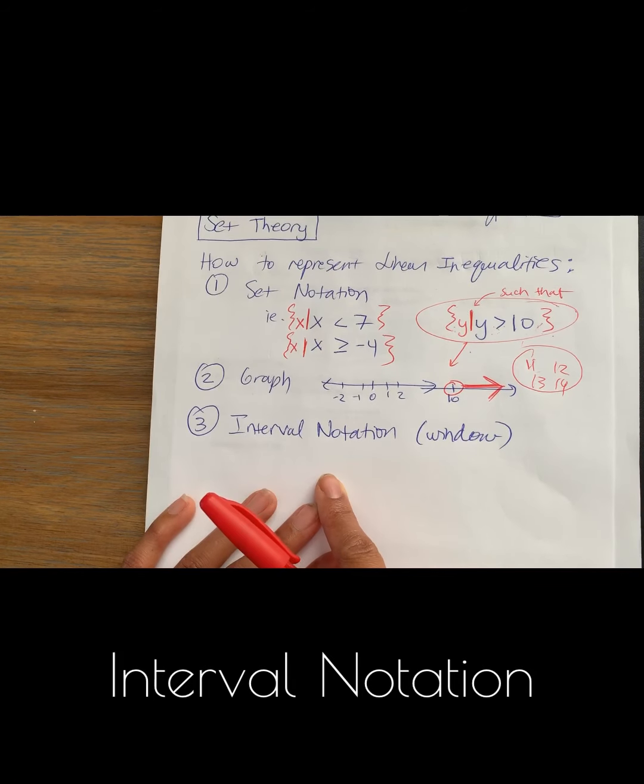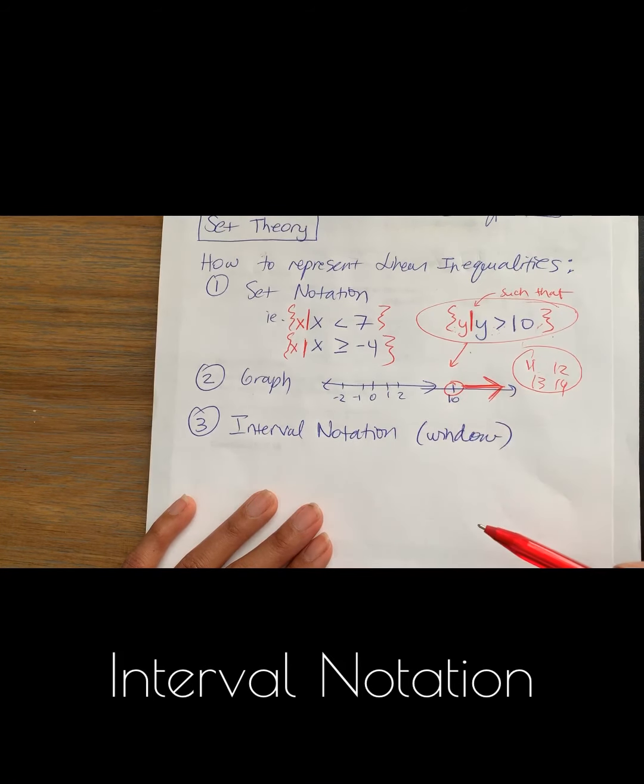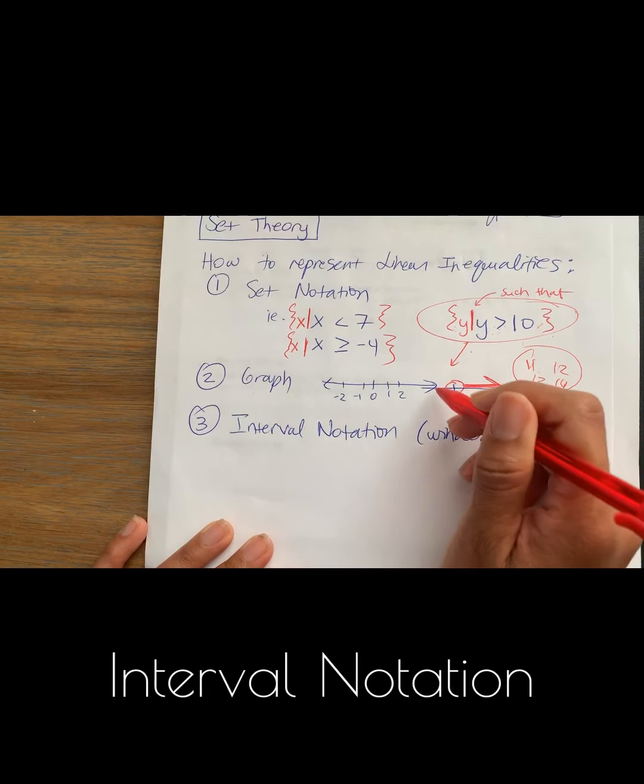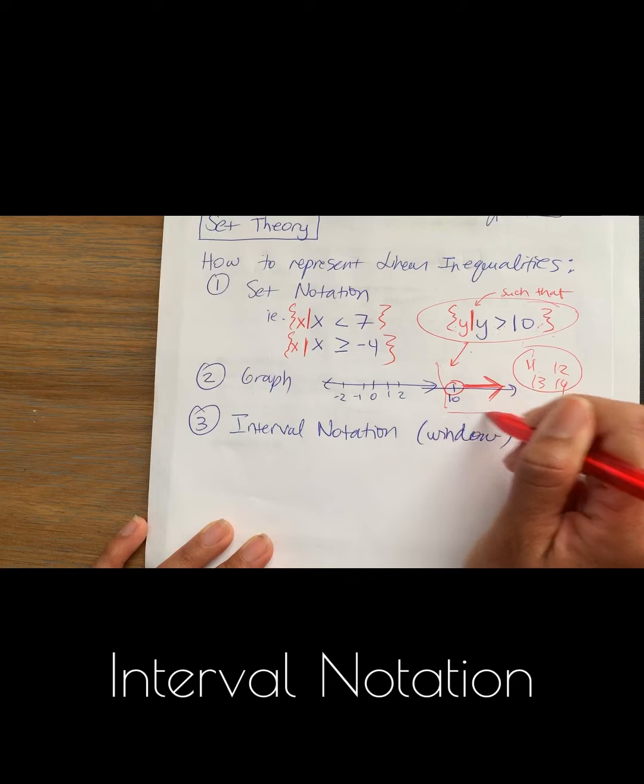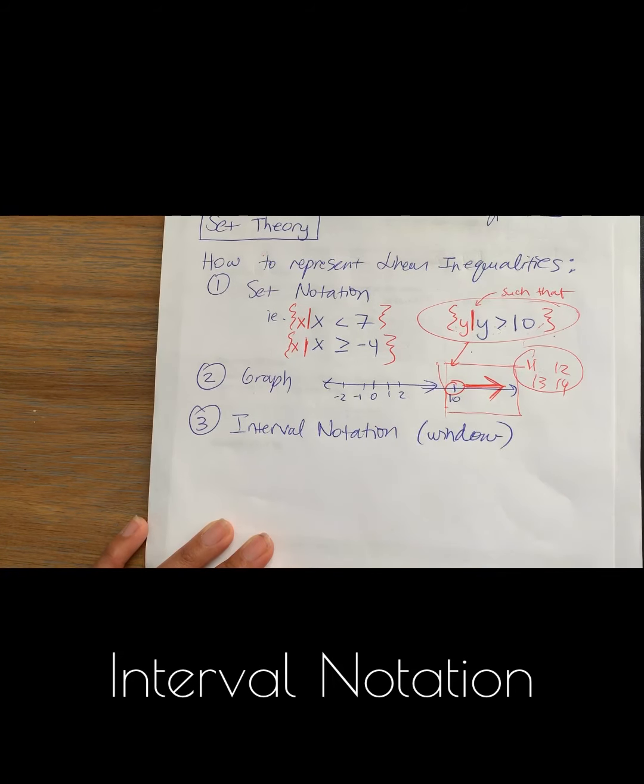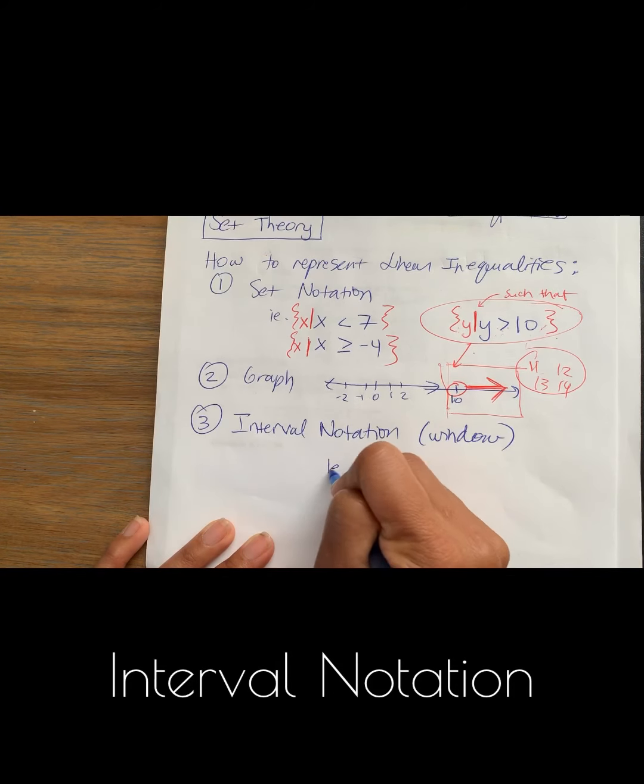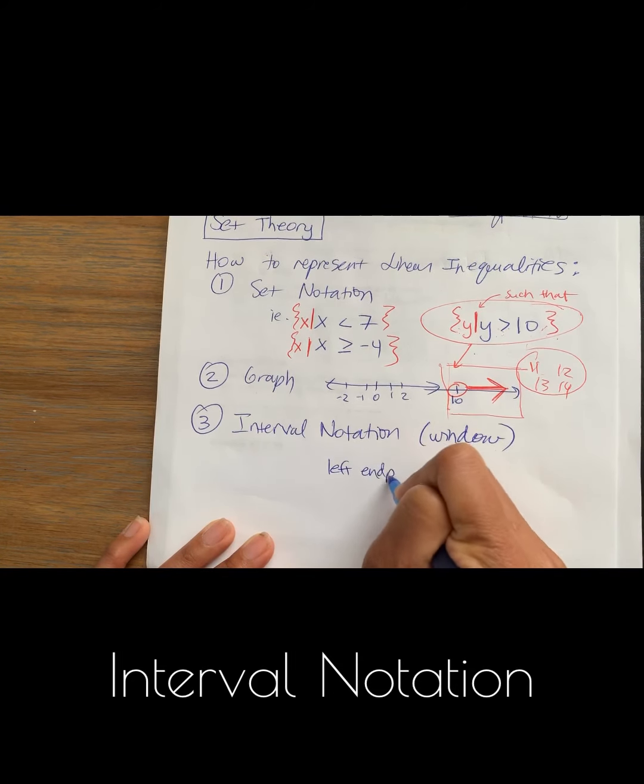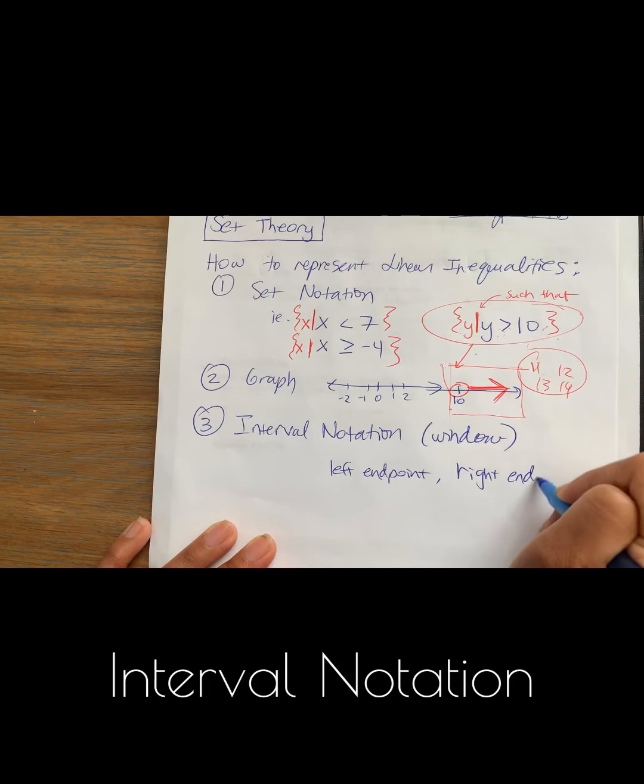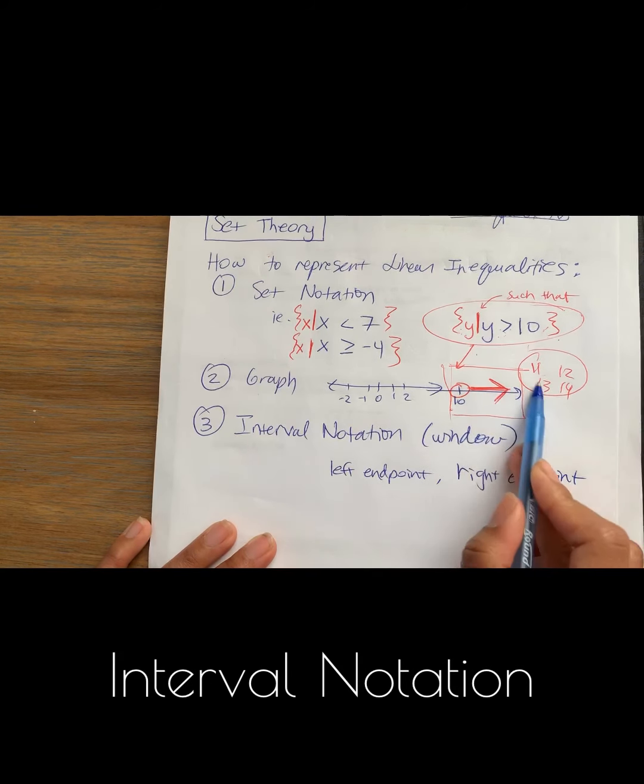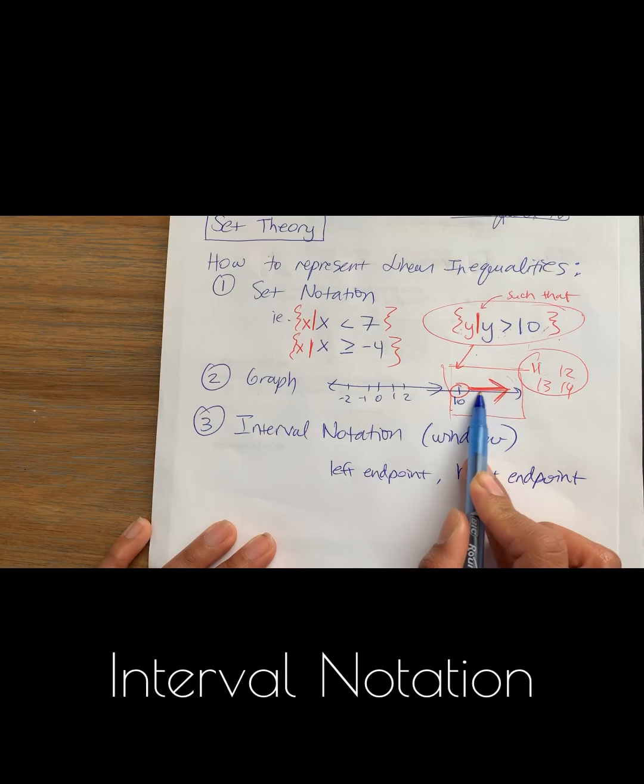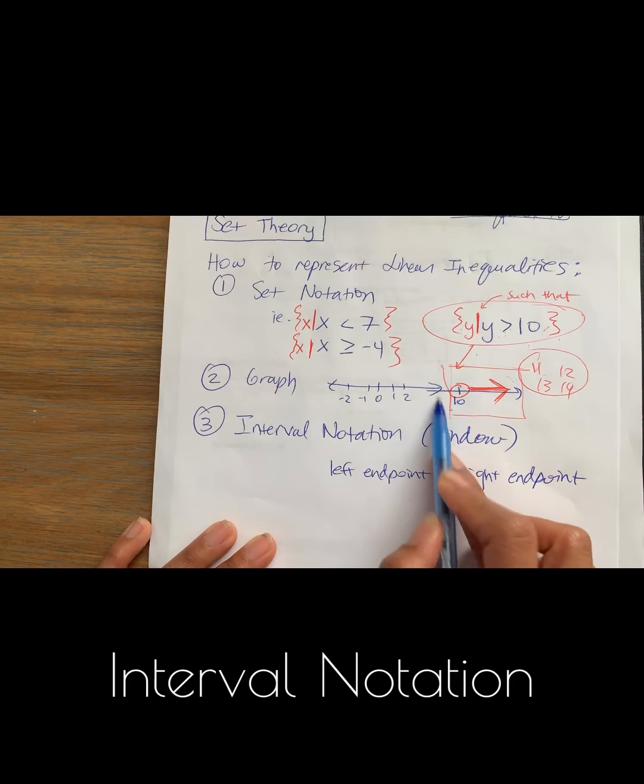Interval notation is another way of representing the same information. Interval notation is a window that describes the graph. So here is the graph. So I put a box around it just to say, okay, that's my window. So the window is going to be written in a way where you have the left end point, comma, the right end point of your solution. So here, when I look at my solution or my graph, what's the farthest left this graph will ever go? Well, the farthest left or the left end point is the number 10.